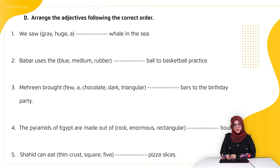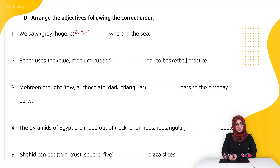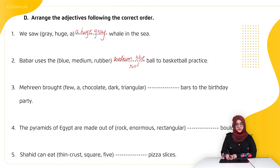Exercise: arrange the adjectives in the correct order. First: 'We saw a huge gray whale in the sea' — size comes first ('huge'), then colour ('gray'). Second: 'Barber uses the medium blue rubber ball for basketball practice' — size ('medium') first, then colour ('blue'), then material ('rubber').